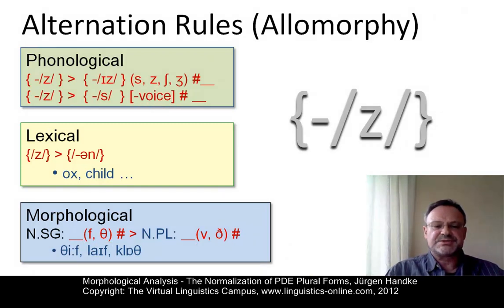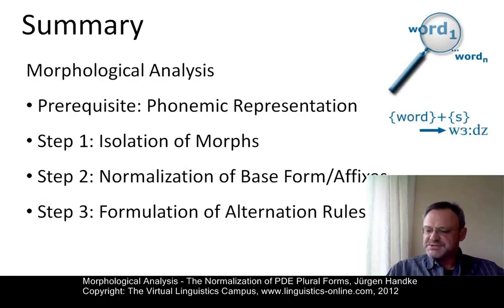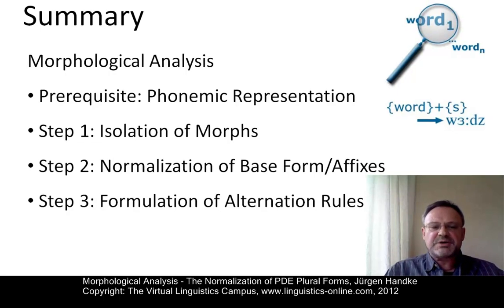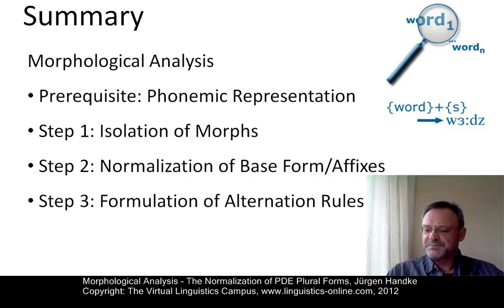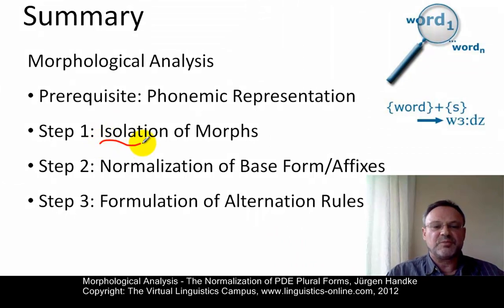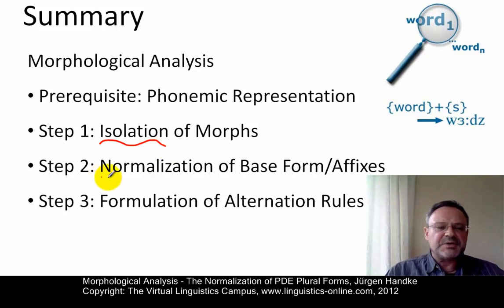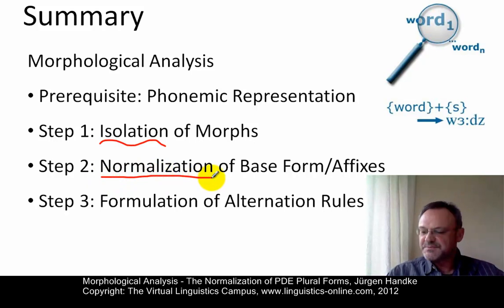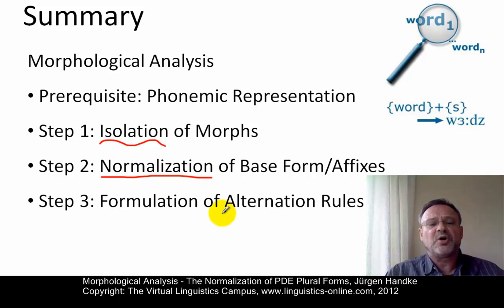Let's now summarize. Morphological analysis must be based on a phonemic representation. In our case, echos and dogs would have been different in orthographical terms but they are identical in terms of a phonemic analysis. Using the phonemic analysis, we first have to isolate the morphs — that's always something we have to do first. Then we set up a normalized form in the case of variation, in our case a normalized affix. And if there are alternation rules, we have to define them very precisely on the basis of the conditions under which they operate.